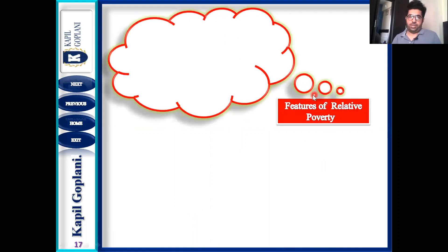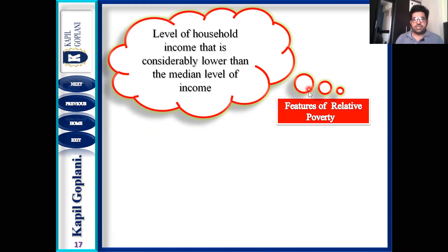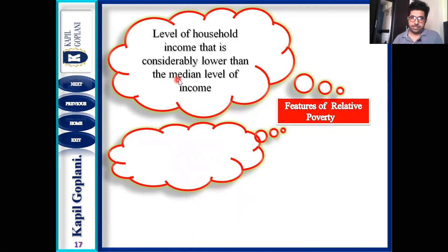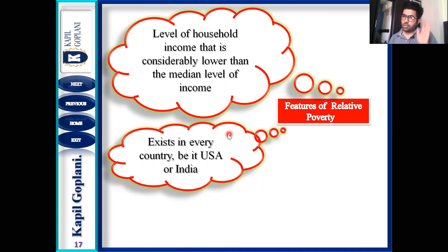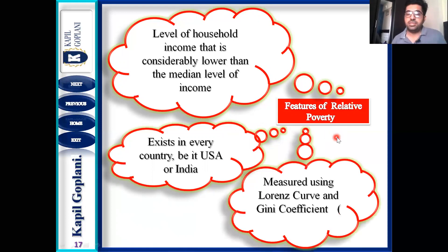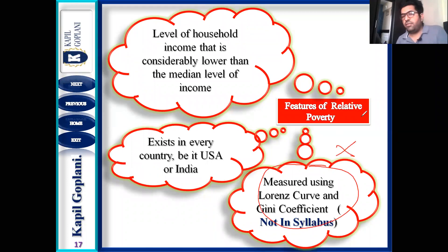Features of relative poverty: the level of household income is considerably lower than the median level of income. It exists in every country — whether USA or India — relative poverty exists. However, absolute poverty is seen majorly in underdeveloped or developing nations. In developed nations, mostly relative poverty cases are seen, not absolute poverty cases.